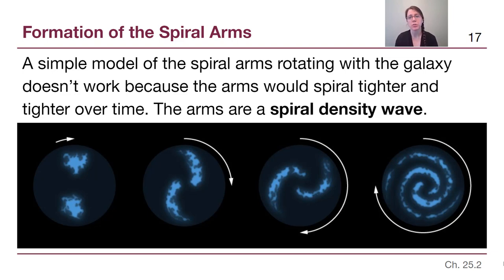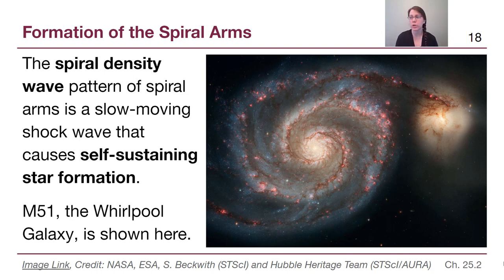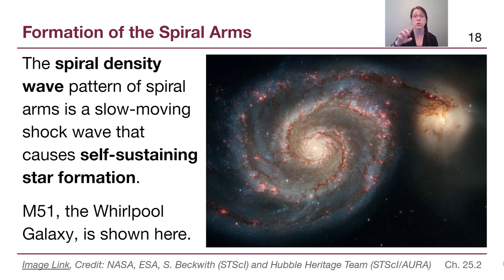Instead, the arms are a spiral density wave. What that means is the spiral arms are a pattern that moves through the galaxy independent of the motion of the stars' orbits. The very best analogy is if you've ever been in a sports stadium where somebody starts the wave — you can see people standing in their seats and raising their arms, and that pattern moves around the entire stadium. All of those people aren't leaving their seats and running through the stadium; they just have their arms up, and then they don't anymore.